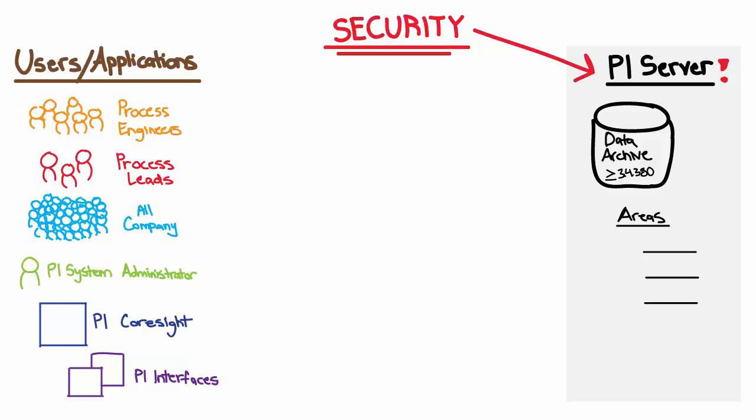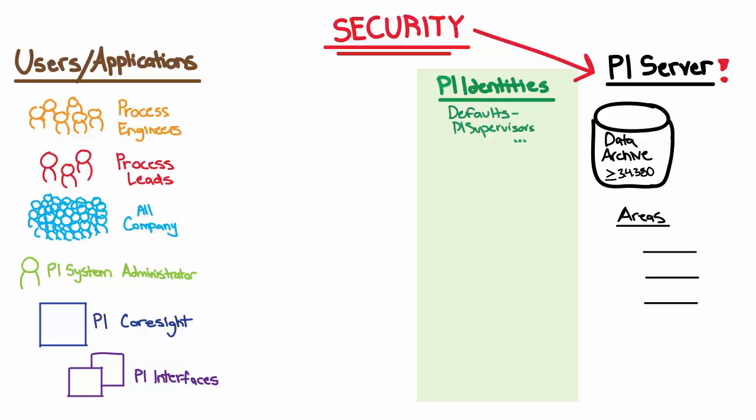Trying to specify individual user permissions on all these different areas would be really difficult to manage, so we focus instead on setting permissions at a group level. We do this with PI identities. PI identities are used to represent different user groups, and they get assigned specific permissions to these areas. Essentially, each PI identity represents a set of access permissions. There are default identities pre-built on the system, like PI Supervisors, and you can use the default PI identities, but you can also customize them and create your own PI identities that exactly match the groups at your organization.